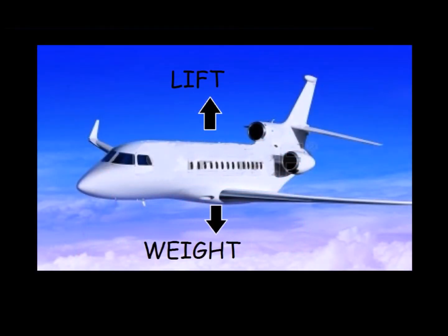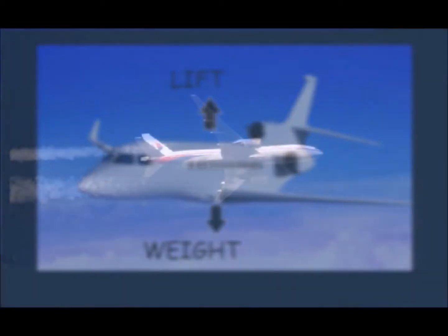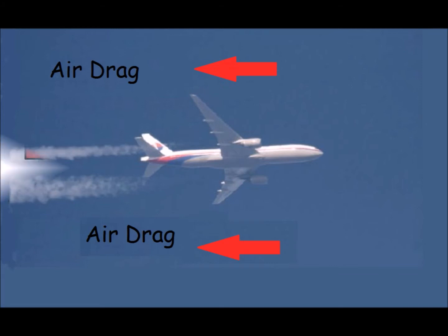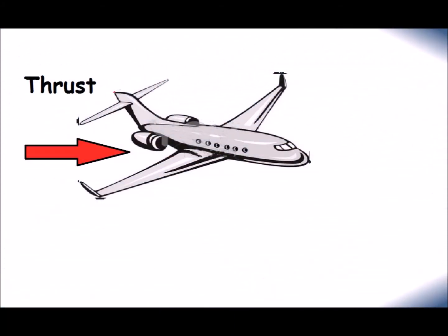Drag is the force which is produced by the resistance of the air, in the opposite direction of the jet plane's motion. Thrust is the force which pushes jet planes forward. It is created by the engine of the jet plane.